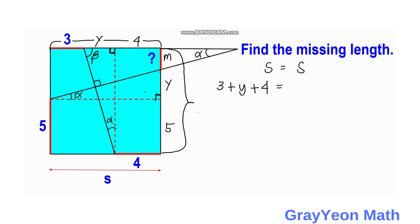And for the vertical length, we have M plus Y plus 5. So we cancel out Y, and this becomes 7 is equal to M plus 5.